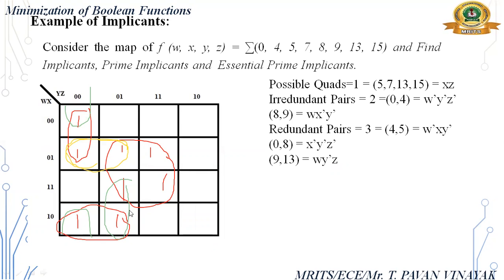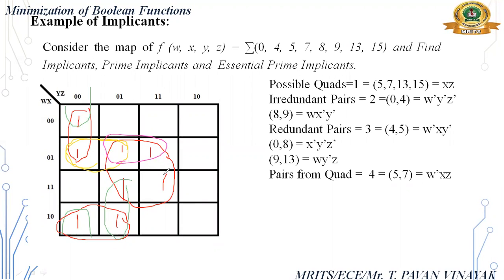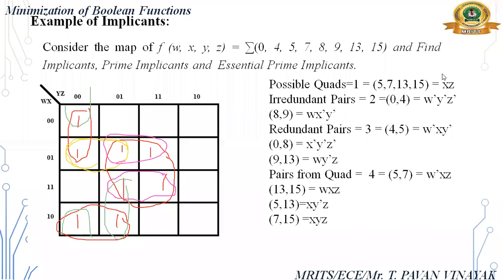Inside the quad we also have pairs. We can form pairs from those as well — pairs from the quad. First pair is 5, 7. Next is 13, 15. Then 5, 13 vertically, and 7, 15. These are also pairs. In total, we get 10 implicants.